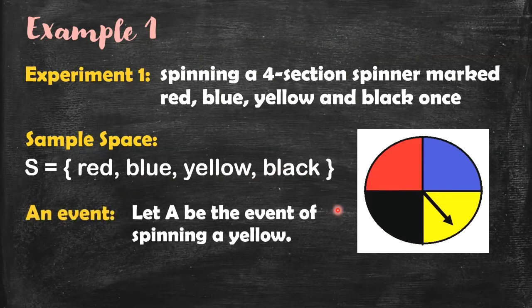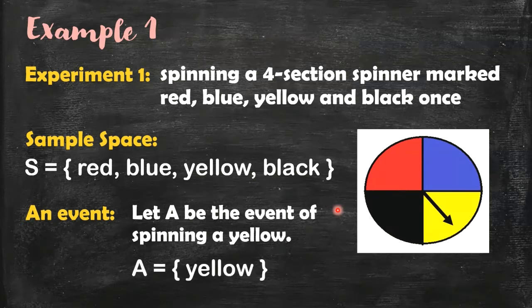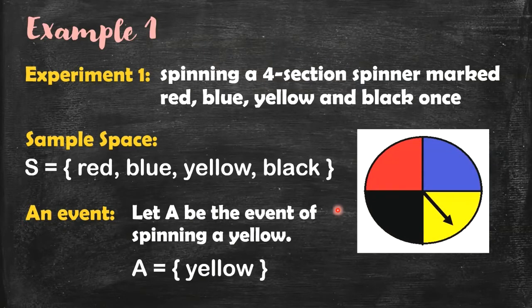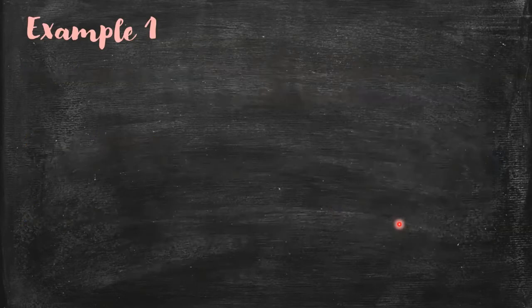So can you tell me what is the sample space? The sample space contains these four colors, right? Okay, let's have this event. Again, this is not the only event; there are many possible events. But for this experiment, we are just going to consider this particular event. Let A be the event of spinning a yellow, so A contains yellow, or A is the set containing yellow.